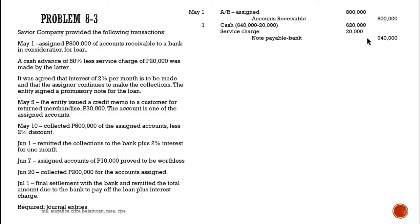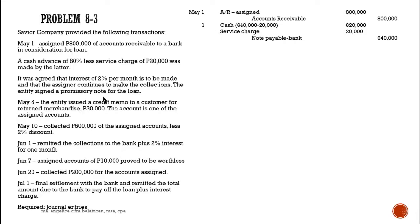How do we get 640,000? That is 80 percent of 800,000. Then there is the service charge of 20,000, which is given. The remainder is the cash proceeds of 620,000 — that is the amount you receive after obtaining the loan.